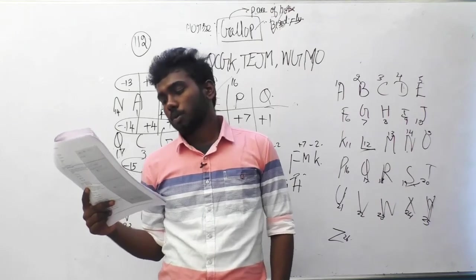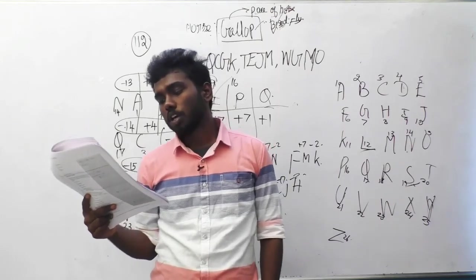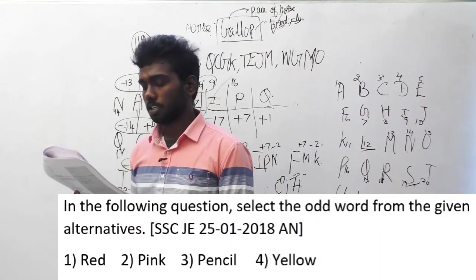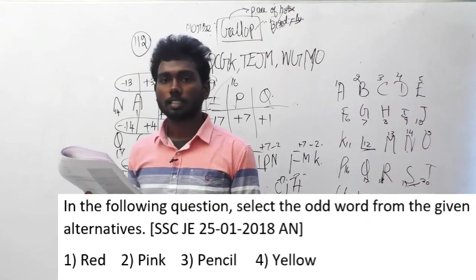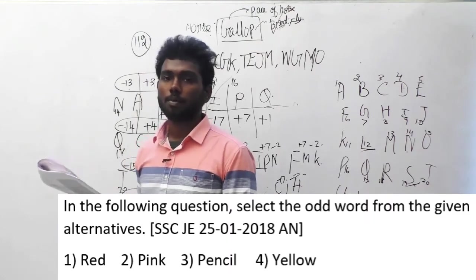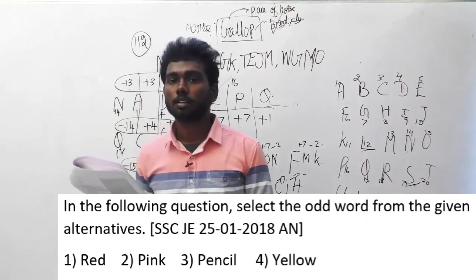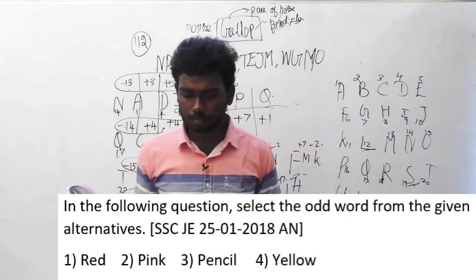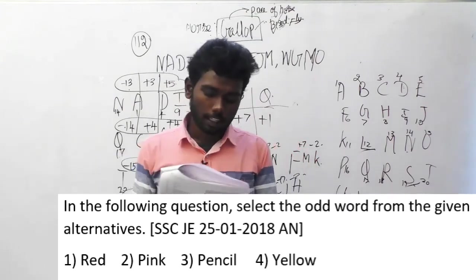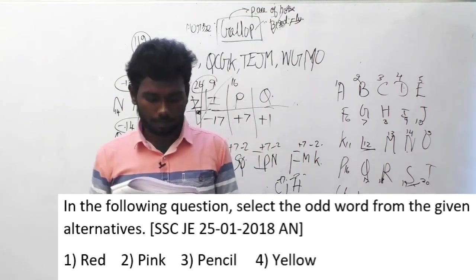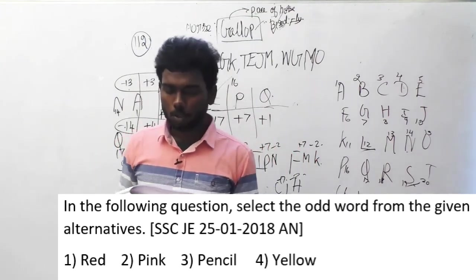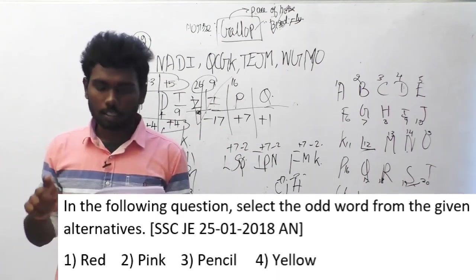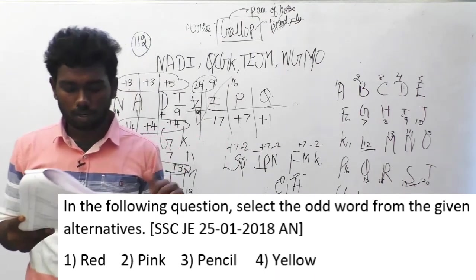Question number 24: in the following question, select the odd word from the given alternatives. This question was asked in SSC JE, 25th January 2018, afternoon session. The options are option 1: red, option 2: pink, option 3: pencil, and option 4: yellow.